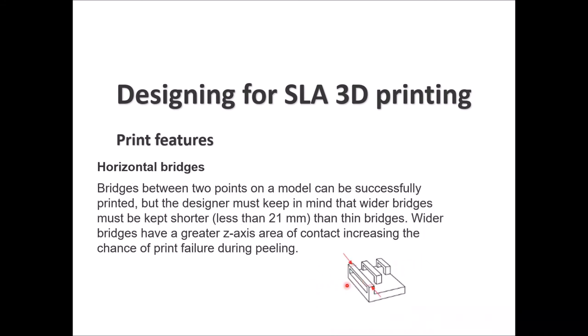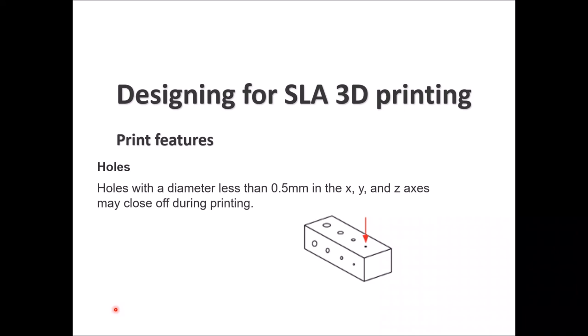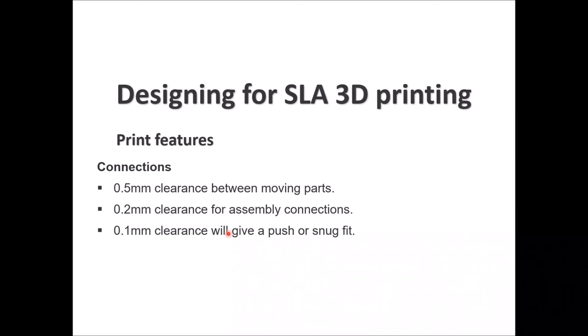For horizontal bridging, bridges between two points can be printed, but wider bridges should be kept shorter — ideally less than 21 millimeters — since wider bridges have a greater z-axis contact area, increasing the chance of print failure during peeling. For holes, diameters less than 0.5 millimeters on any axis may close during printing as layers relax before solidifying. For connections: use 0.5 millimeter clearance for moving parts, 0.2 millimeter for assembly connections, and 0.1 millimeter for push or snug fit.